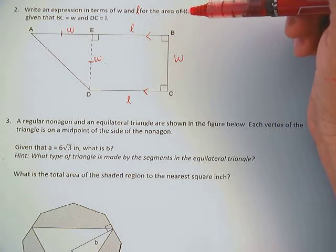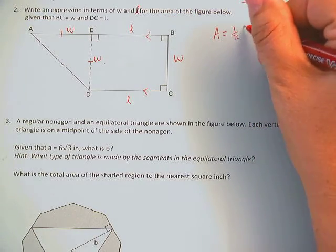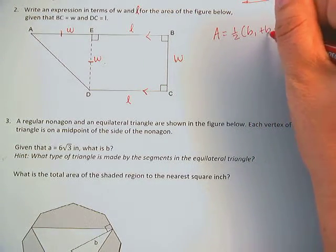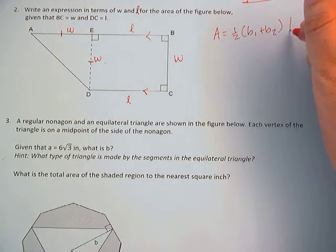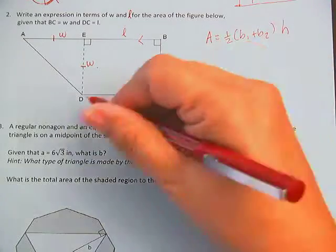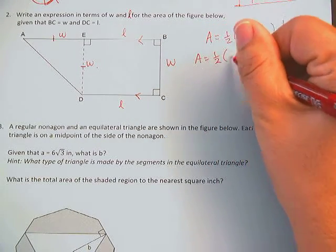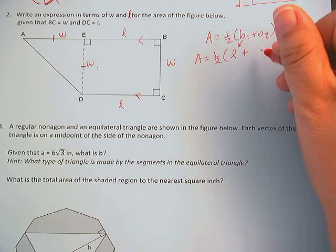Well, area of a trapezoid is one-half times (base one plus base two) times the height. Now, I'm going to substitute in base one. I'll call that base one. So that's L.